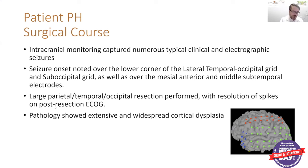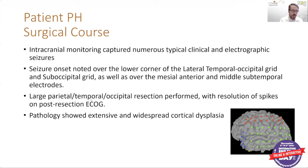With seizure onset identified to that region, the patient underwent a parietal occipital temporal resection. During epilepsy surgeries, we do electrocorticography or ECOG — we place electrodes on the surface of the brain during surgery both before and after resection. Before surgery we monitor looking for spikes; after surgery we do ECOG again to ensure no more discharges are seen. For this patient, after her parietal temporal occipital resection, no spikes were noted on ECOG. Pathology showed widespread cortical dysplasia — abnormally formed tissue that commonly produces abnormal electrical signals resulting in seizures.